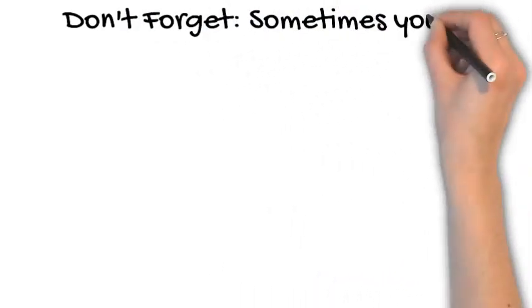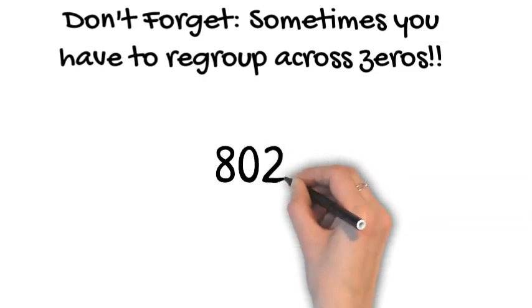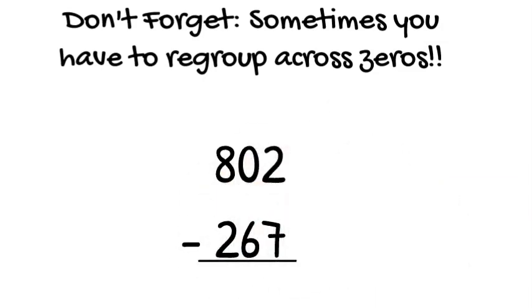One more thing you cannot forget. Sometimes you have to regroup across zeros. So on this problem, 802 take away 267. We're going to start the same as we always do. We go to the ones place. 2 take away 7. There's more on the floor. We have to go next door. So we go to Mr. Tens.